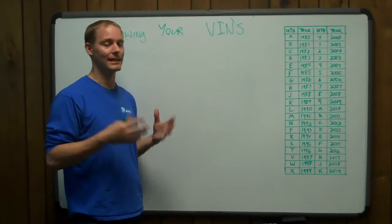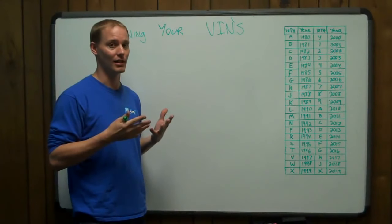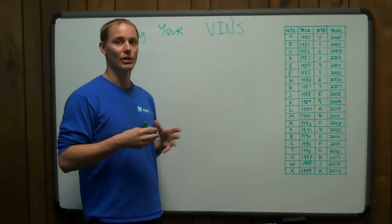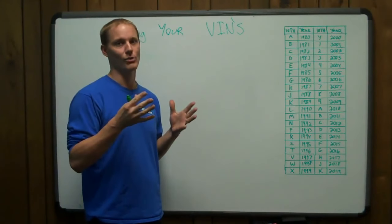Because before 1981, there was no standardization of VINs on cars. Before that, it could have been 10 digits, it could have been 5 digits, it could have been whatever the car manufacturer wanted.